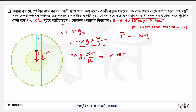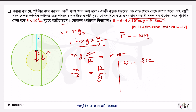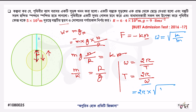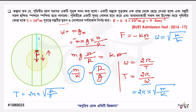যেটা হোছে আমরা 2π divided by T — আমরা বলতে পারি T equals 2π divided by omega. তাই না আছে। তোমরা নিশ্চয়ই শকলে এটা জানো যে omega equals root over k by m. সো এখানতে আমরা যদি omega-টা k by m দিয়ে replace করি, সো এটা হই 2π into root over m by k. তাই না আছে। এখন দেখো m by k কিন্তু আমরা ইজে R divided by g দিয়ে...